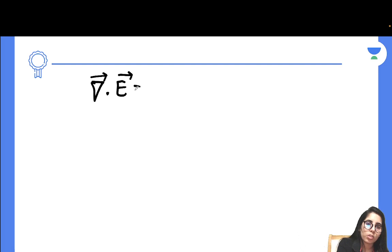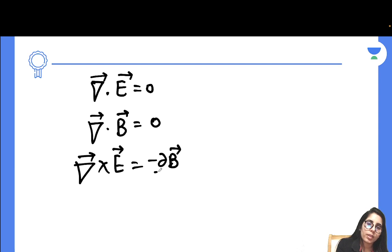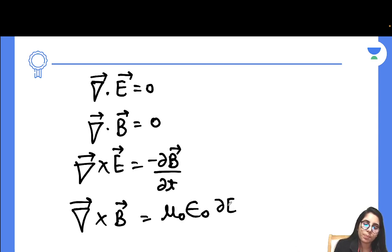You just need to prepare these ones: del dot E equals zero, del dot B equals zero, del cross E equals minus del B over del T, and del cross B equals mu naught epsilon naught del E over del T. Two equations are talking about divergence, two are talking about curl.